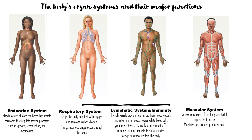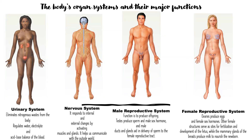The urinary system's main job is eliminating nitrogenous waste from the body and regulating water, electrolyte, and acid-base balance of the blood. It tells the body whether to retain water when dehydrated or expel it when excess is present. Electrolytes like sodium and chloride are all regulated by the urinary system.